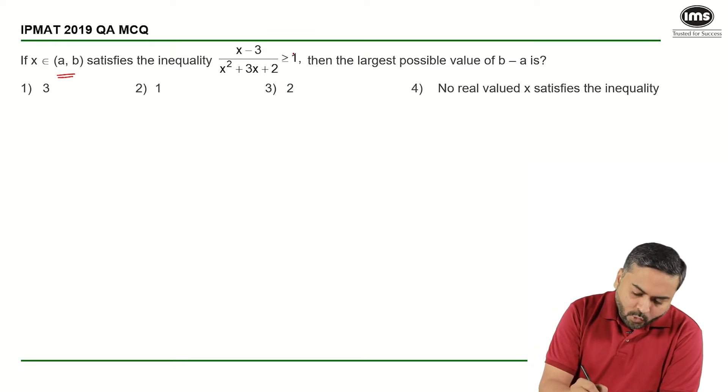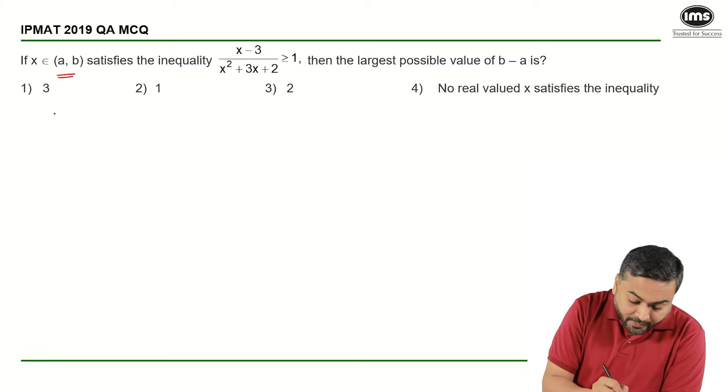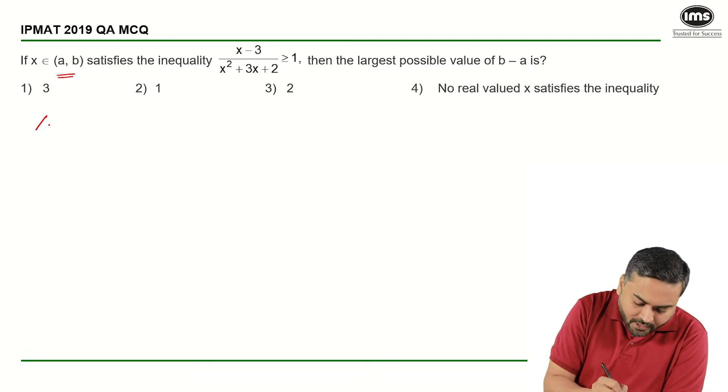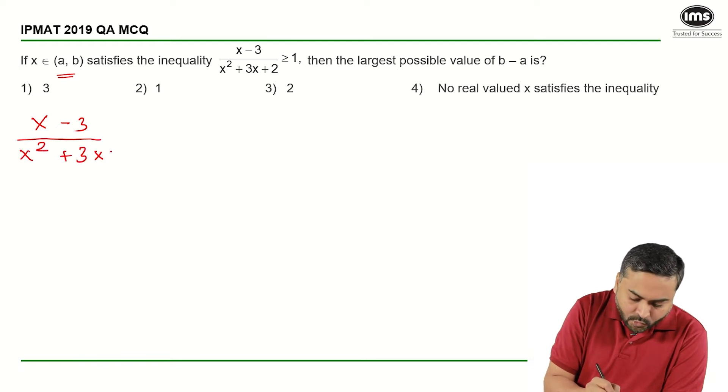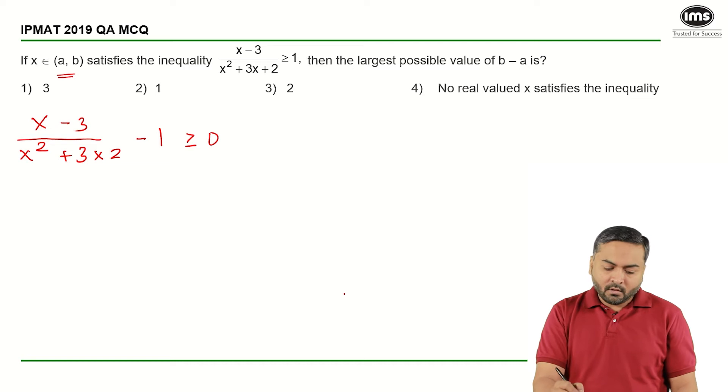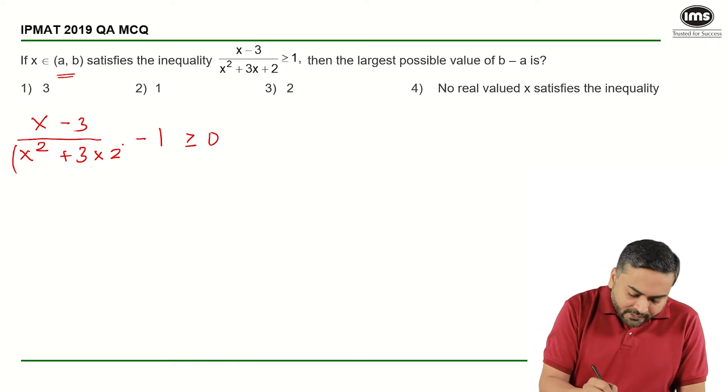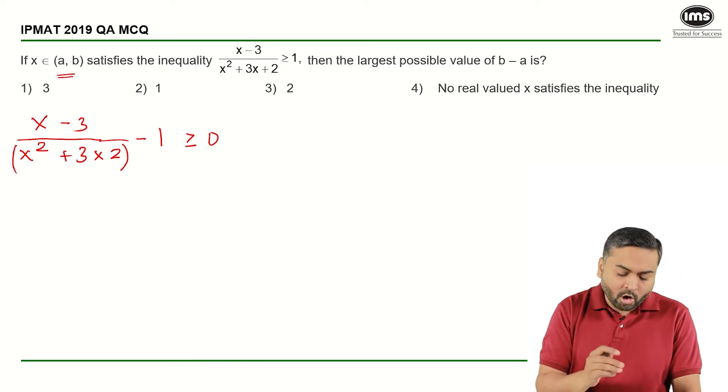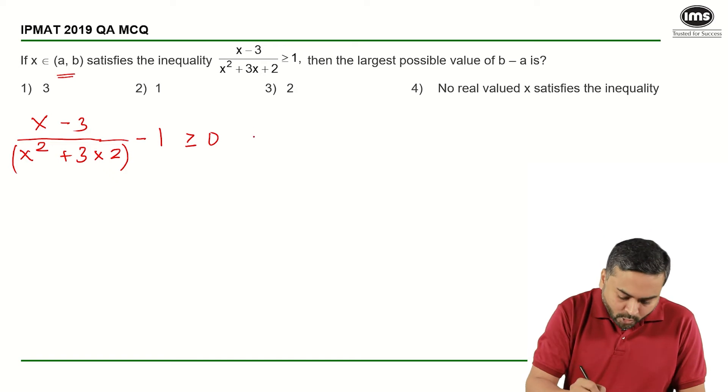What I can do is, I can rewrite this inequality as (x - 3)/(x² + 3x + 2) - 1 ≤ 0. Now, I can multiply this entire thing, the entire denominator with minus 1. So what will I get?